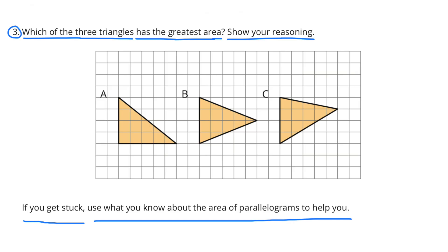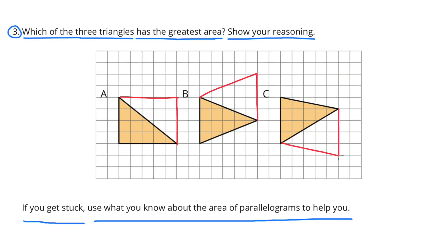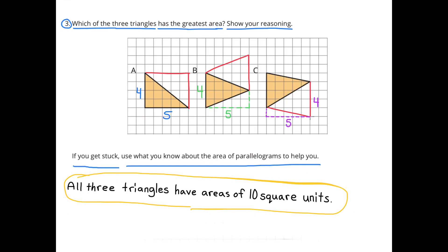Number 3: Which of the three triangles has the greatest area? Show your reasoning. I'm going to use what I know about parallelograms to help me. I'll turn these triangles into parallelograms by decomposing and rearranging into rectangles or parallelograms. The area of the rectangles and parallelograms are twice the area of the original triangles. They all have a base of 5 units and a height of 4 units, giving an area of 20 square units. So all the triangles have an area of 10 square units — they all have an equal area of 10 square units.